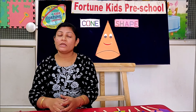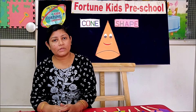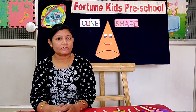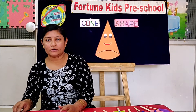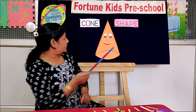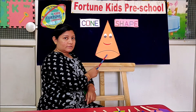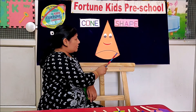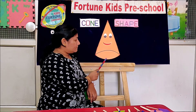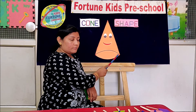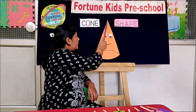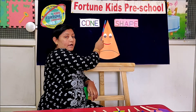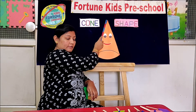Hello dear children, today we are going to learn a new different shape — that is cone. Look children, this is a cone shape. It has one circular base or bottom, and two slant lines go up and meet on the same point.